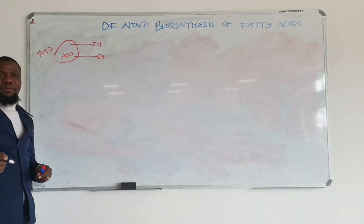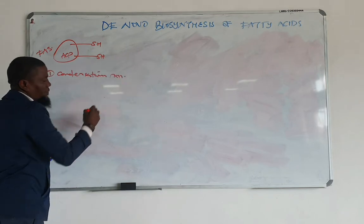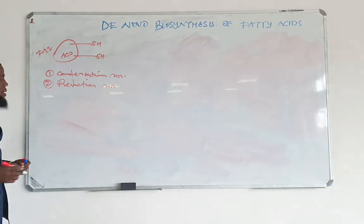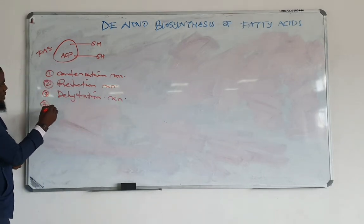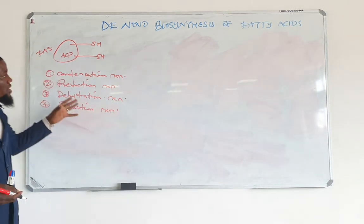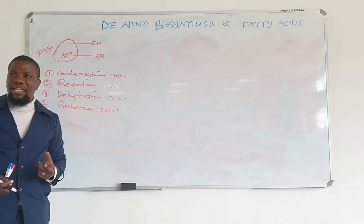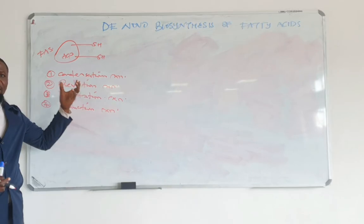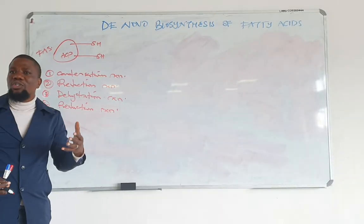The repeating reactions in fatty acid synthesis include: first, a condensation reaction; second, a reduction reaction; third, a dehydration reaction; and fourth, another reduction reaction. The growth of a fatty acid chain occurs by addition of acetyl groups — that is, two carbons at a time. The first reaction adds two carbons, the next adds two more carbons, and so on.